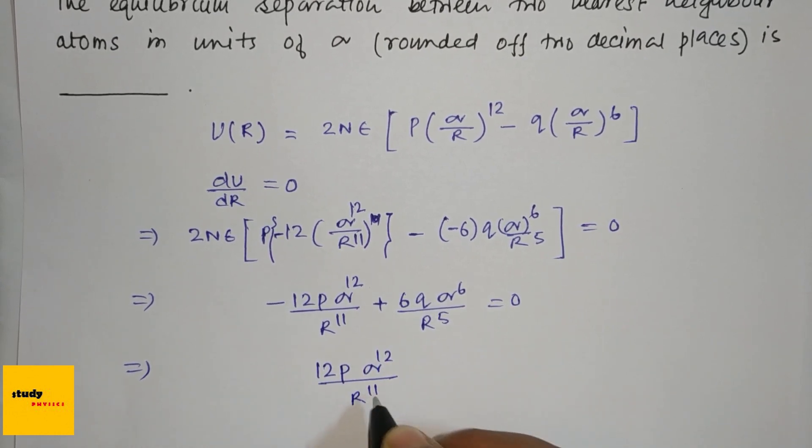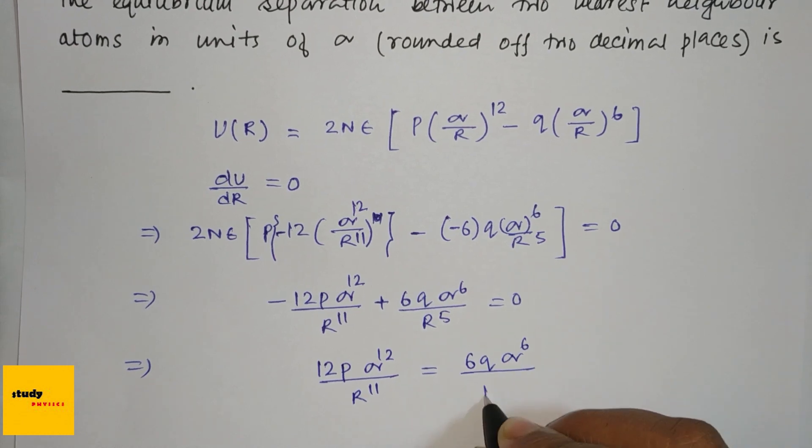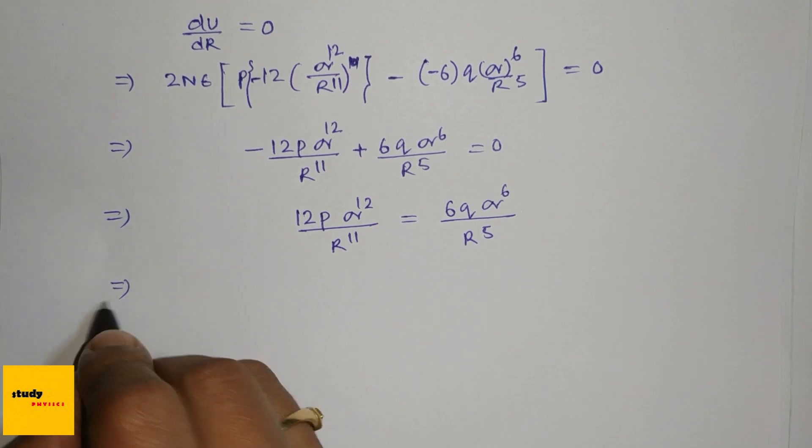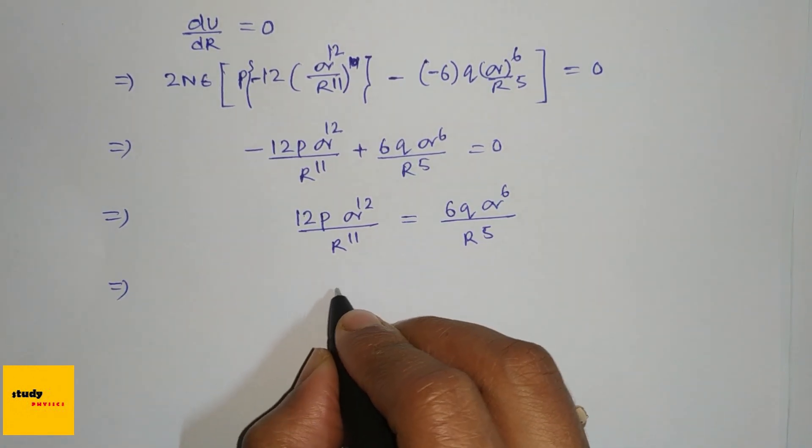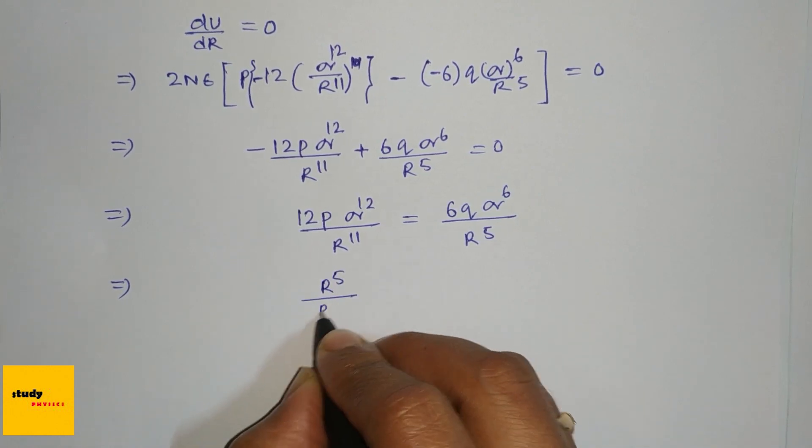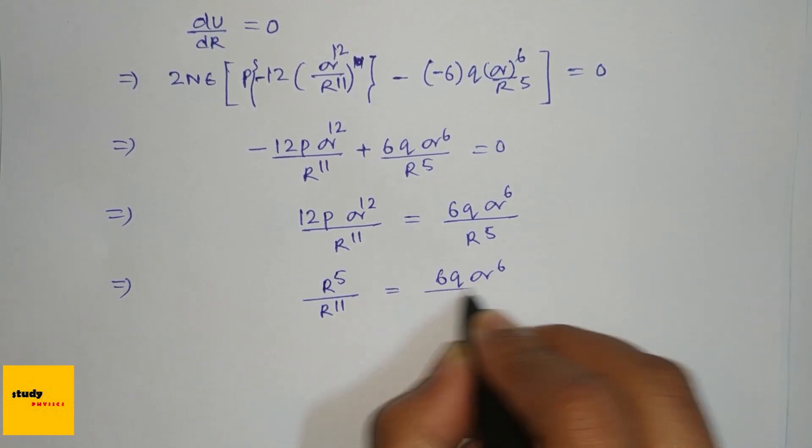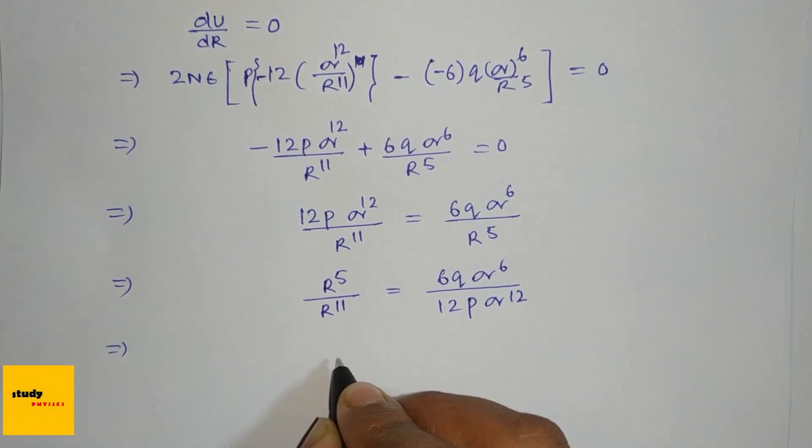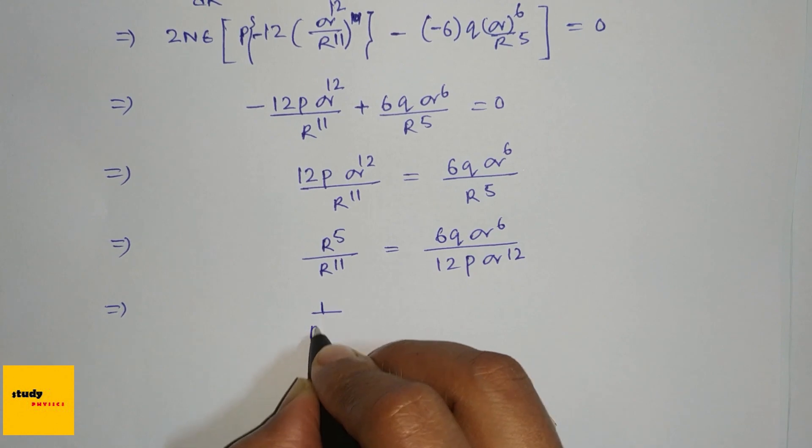Now R^6 equals 6q(σ^6)/(12p(σ^12)). Simplifying, R^6 equals 6q(σ^6)/(12p(σ^12)), which gives 1/R^6 equals...